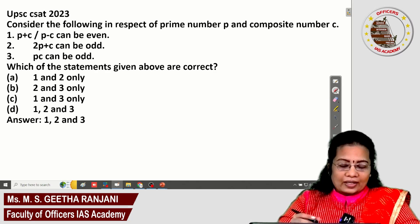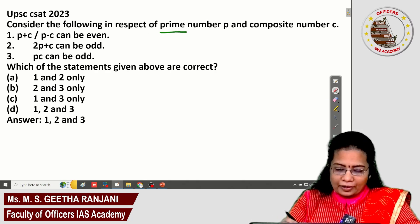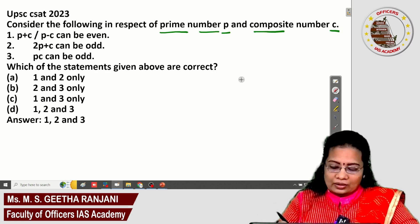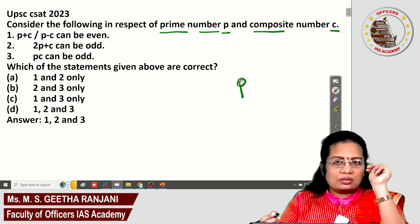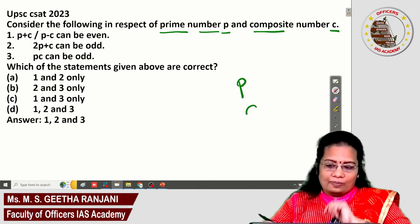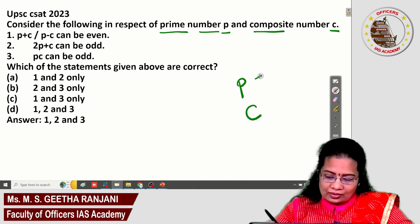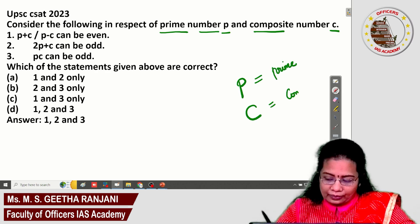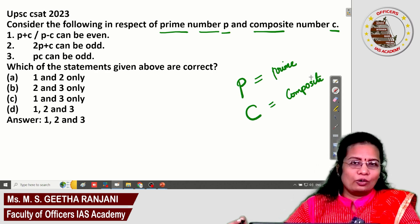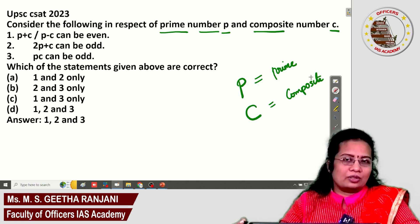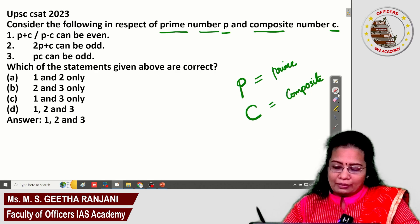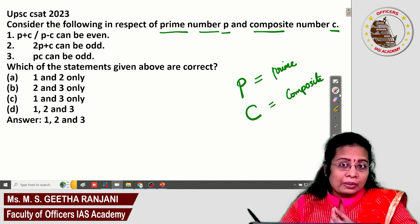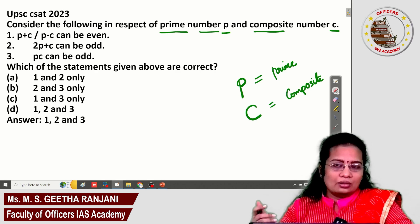Today's question: consider the following in respect of prime number P and composite number C. We are given two types of numbers — P is a prime number and C is a composite number. A prime number has just two factors, and composite numbers have more than two factors.